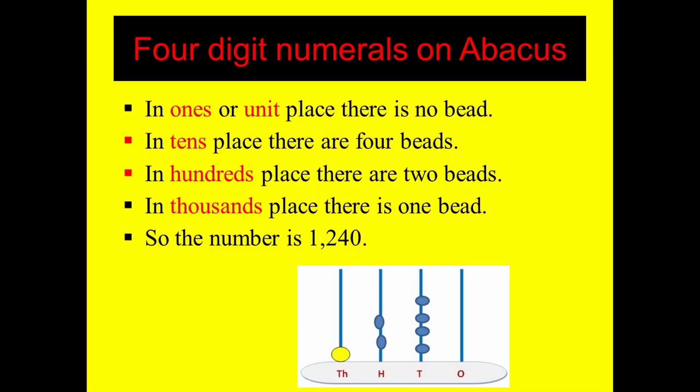In the example shown, there are no beads in the ones place, four beads in the tens place, two beads in the hundreds place, and one bead in the thousands place. So the number is one thousand two hundred and forty (1240). We will now see more examples of four digit numbers on the abacus.